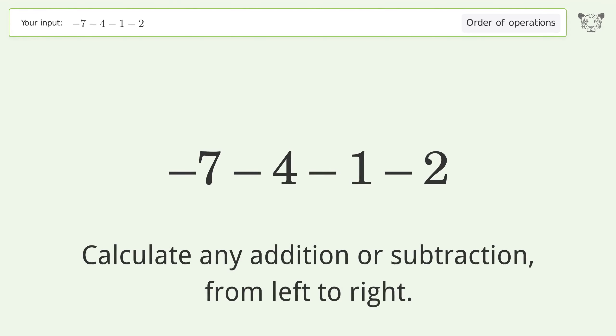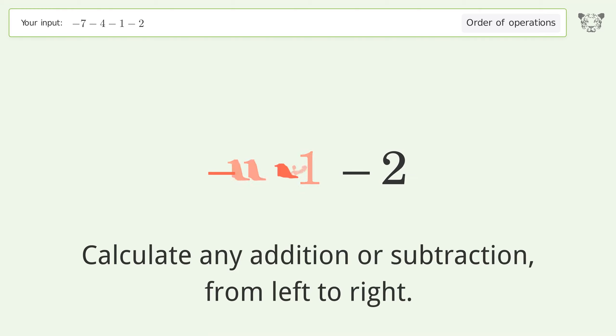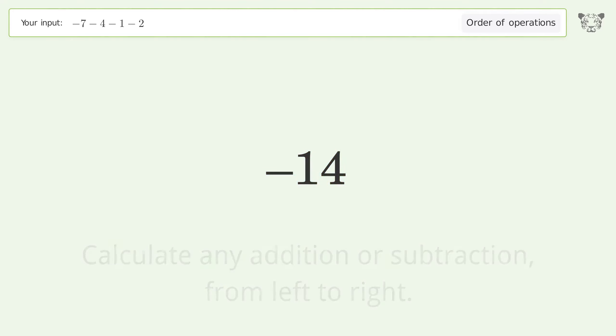Calculate any addition or subtraction from left to right. Negative 7 minus 4 equals negative 11. Negative 11 minus 1 equals negative 12. Negative 12 minus 2 equals negative 14. And so the final result is negative 14.